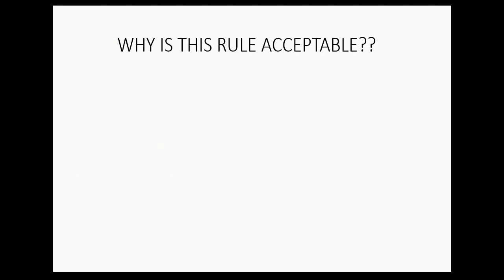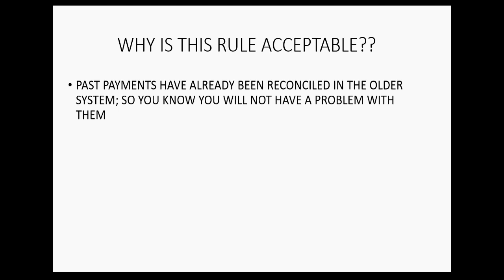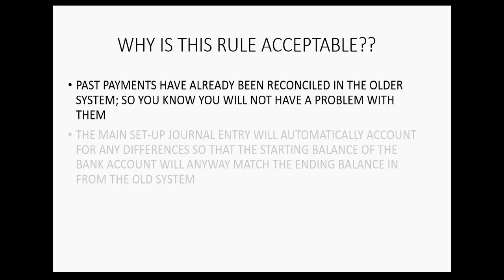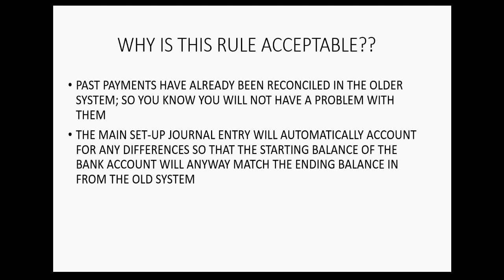Why is this rule acceptable? Past payments have already been reconciled in the older system, so you don't have to worry about a mismatch with your bank — the last month of the old system will be reconciled and those checks are part of it. The main setup journal entry we're going to make will automatically account for the differences in the cash account for amounts applied to closed invoices. It's already taken into consideration mathematically. Enter payments only in the amount that decreased the open invoice, not the full amount if some was applied to a closed invoice.